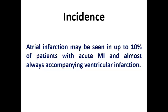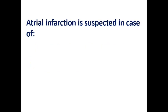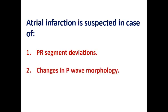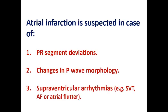It is almost impossible to see isolated atrial infarction; it usually occurs in the context of ventricular infarction, as the culprit artery responsible for ventricular infarction can also result in atrial infarction. Atrial infarction is suspected in cases of PR segment deviations on the ECG, changes in P wave morphology, or supraventricular arrhythmias like SVT, atrial flutter, or atrial fibrillation.